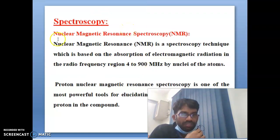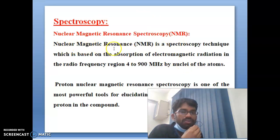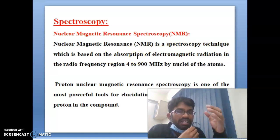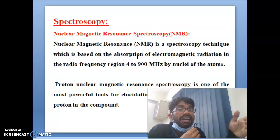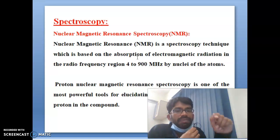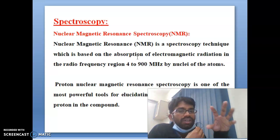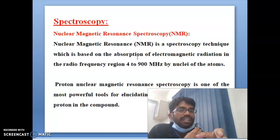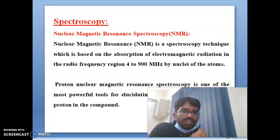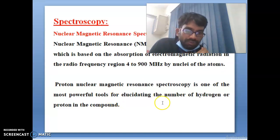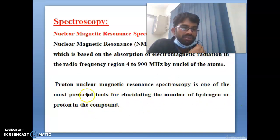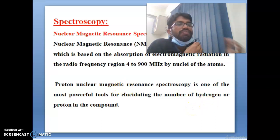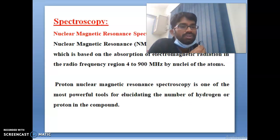What is NMR? Nuclear magnetic resonance spectroscopy is a spectroscopic technique based on the absorption of electromagnetic radiation in the radio frequency region — 400 to 900 MHz — by the nuclei of atoms. Proton NMR spectroscopy is one of the most powerful tools for elucidating the number of hydrogens or protons in a compound.